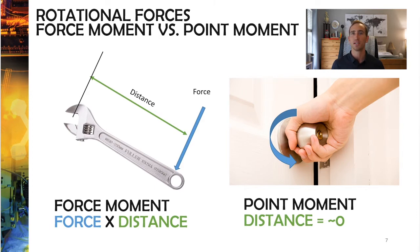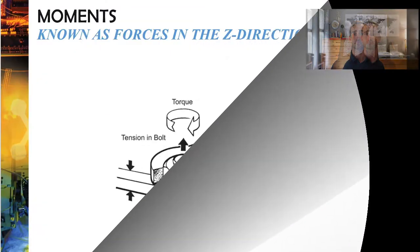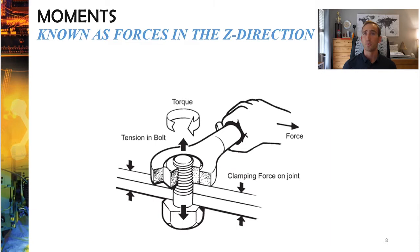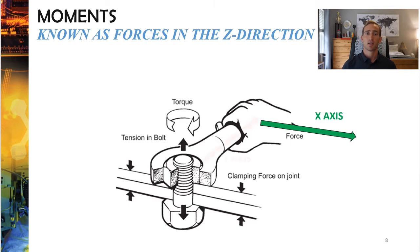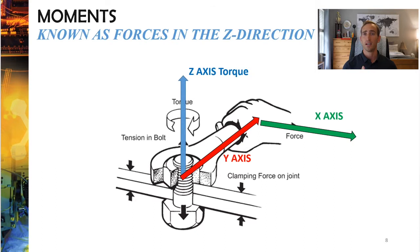Another example is a screwdriver. It's so small that the moment arm involved is very, very small — you can almost treat that as a point moment as well. We refer to moments as forces along the z direction because your force might be along the x-axis while your moment arm is along the y-axis. At least one of those things is perpendicular to the other, so the object rotates about the z-axis.